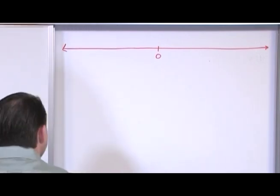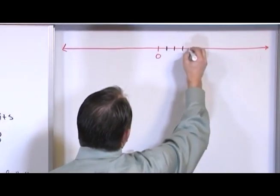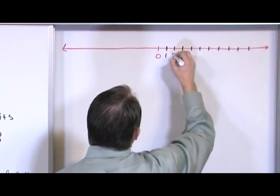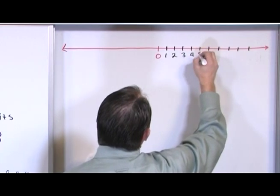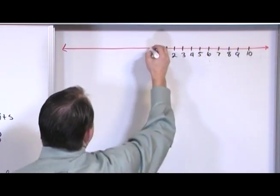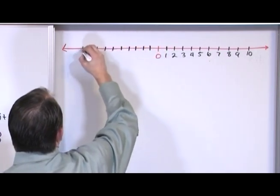And let's go ahead and write them in black. So we have one, two, three, four, five, six, seven, eight, nine, ten. And over here, I'm going to have negative one, negative two, negative three, four, five, six, seven, eight, nine, ten.